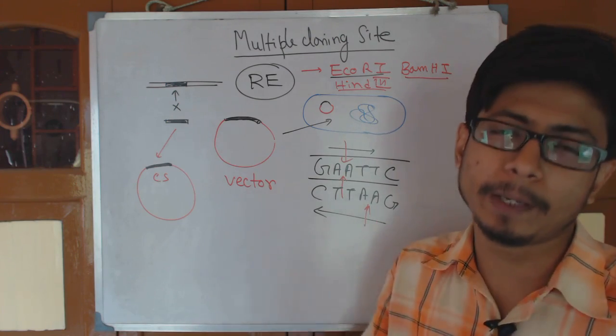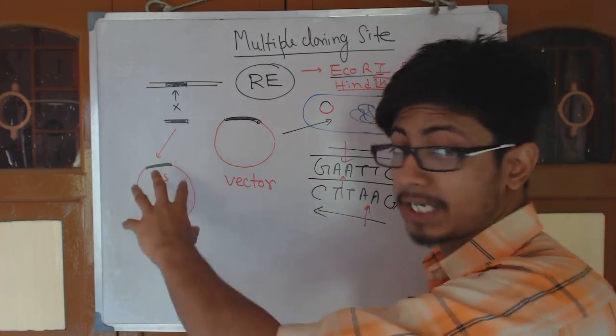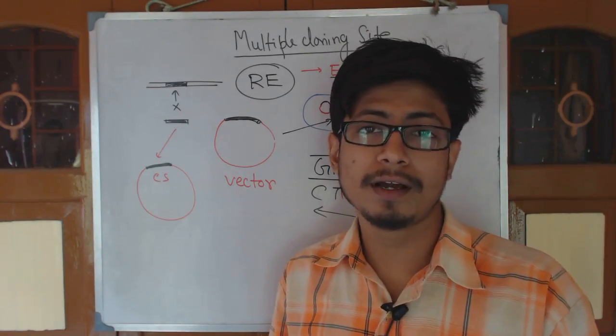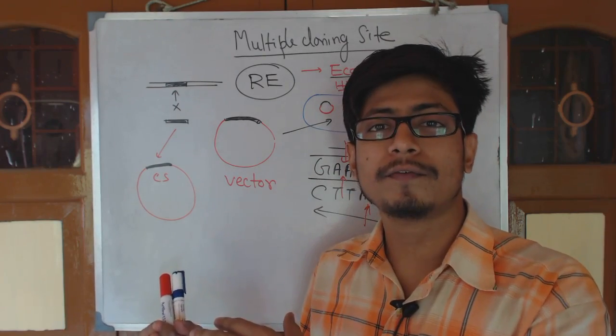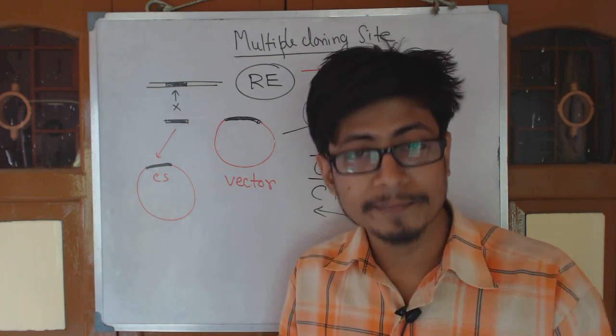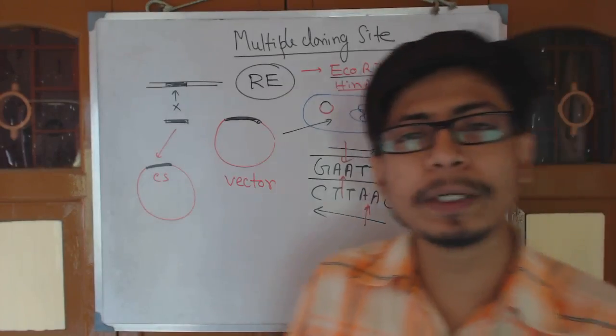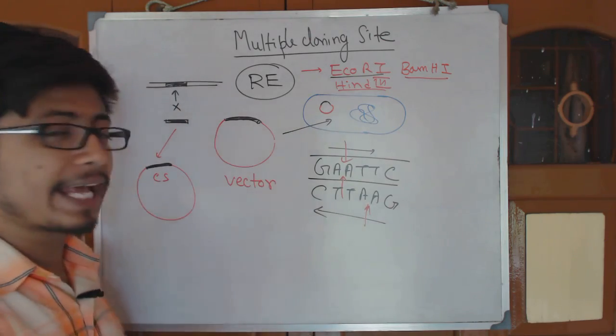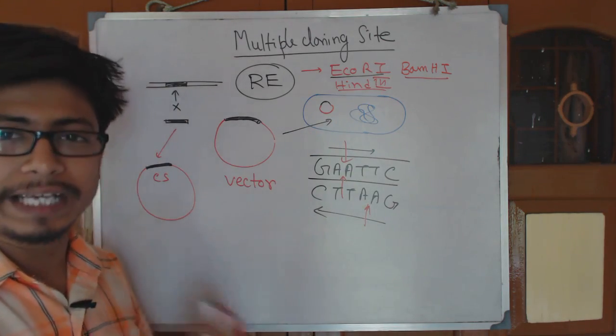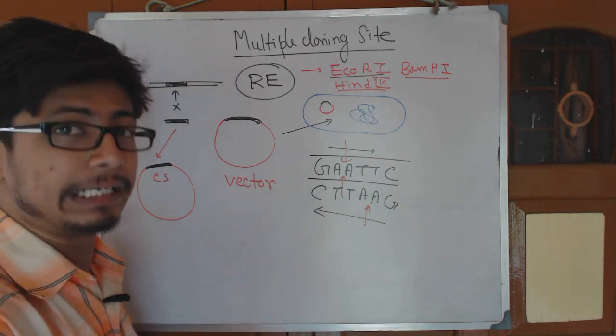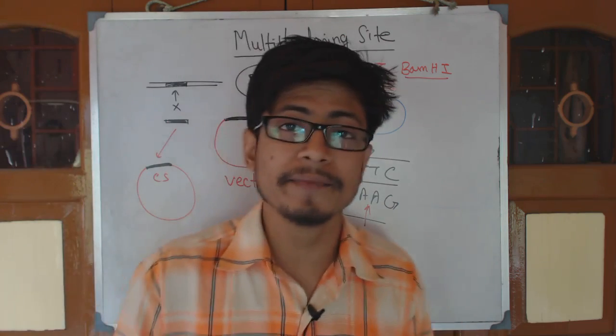We call it a multiple cloning site because that site contains many restriction endonuclease cloning sites. This is one of the most important things that should be present in a plasmid or any gene delivery vehicle to become a vector. That is all about multiple cloning site or MCS, also known as polylinker.